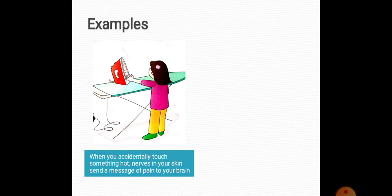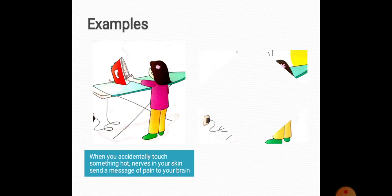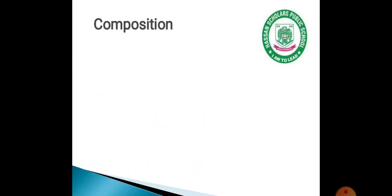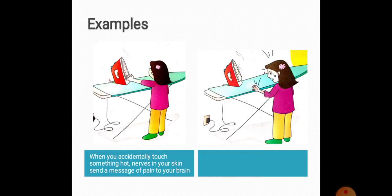Look at this example: when you accidentally touch something hot — for example, this child touches a hot iron. When your hand touches it, the nerves send a message to the brain. When the message reaches the brain, the brain responds and you immediately pull your hand back. The brain has many nerves which tell you how to react.